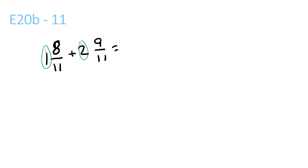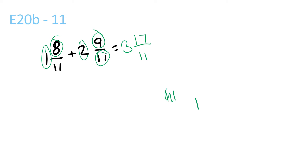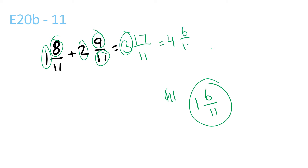1 plus 2 is 3. 8 plus 9 is 17 over 11. 1 and 6 over 11 plus 3 is equal to 4 and 6 over 11.